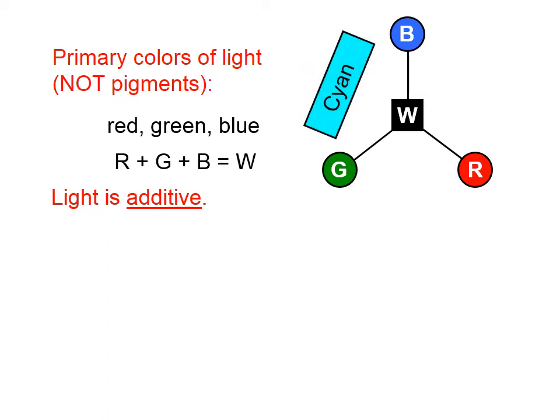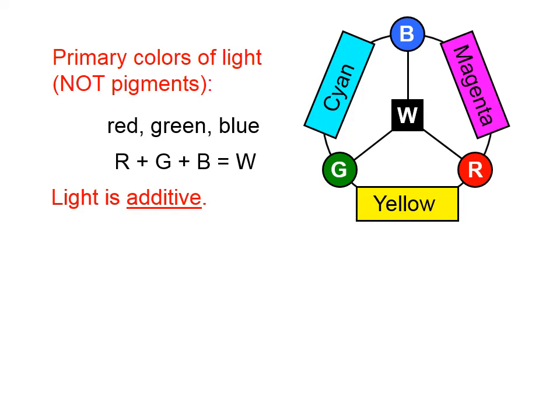If we shine green light and blue light on a surface, we're going to get a color which our brains interpret as cyan. Blue light and red light shine on a white surface will appear to be a magenta color. Green light and red light shine on a white surface appear to be yellow.